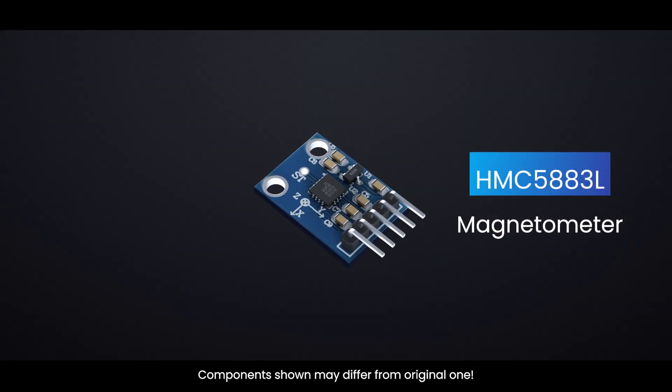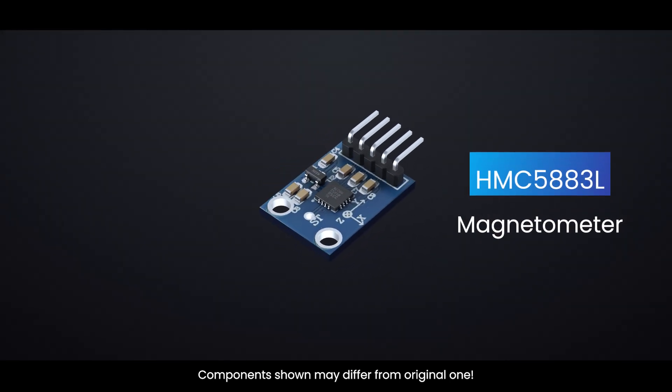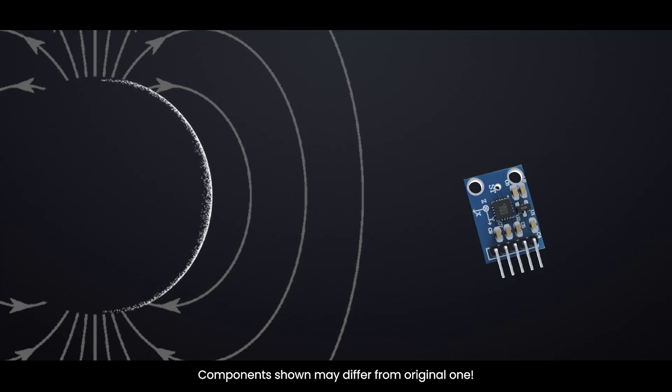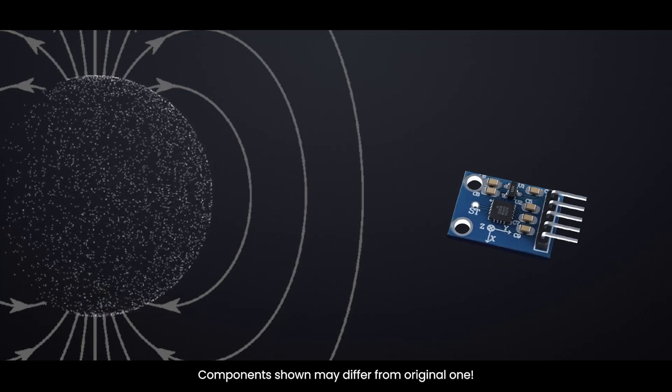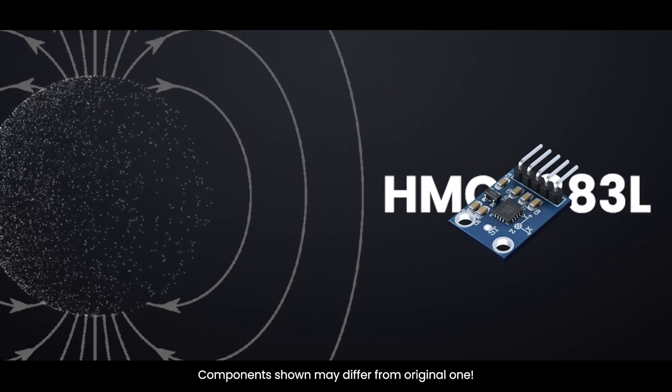Watch this tiny chip find north instantaneously, no GPS, just Earth's magnetic field. Let's dive inside the HMC5883L magnetometer.